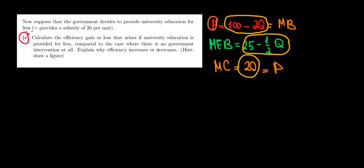Let's solve part C now. Suppose that the government decides to provide university education for free. So the subsidy is $20 per unit. What does that mean? It means that it covers the entire price of education, so the consumers, the students, pay zero.